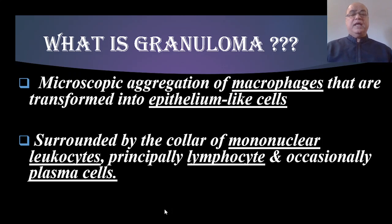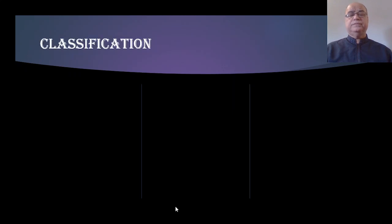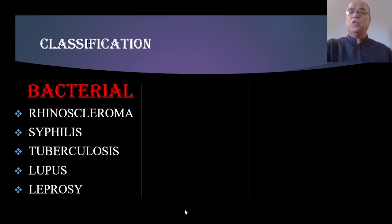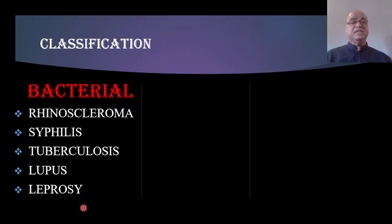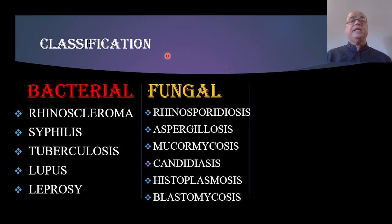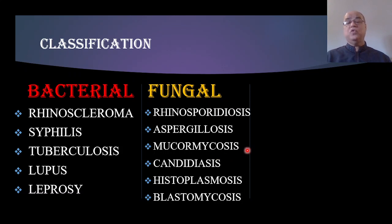Granulomas can be classified according to the underlying causative organisms. There is a bacterial granuloma group which includes rhinoscleroma, syphilis, tuberculosis, lupus, and leprosy. Then there is a fungal granuloma group, as different fungi can affect the nose and paranasal sinuses, leading to chronic granulomatous inflammation. This includes rhinosporidiosis and aspergillosis, which are common in the nose.